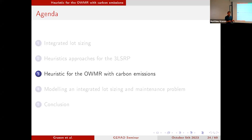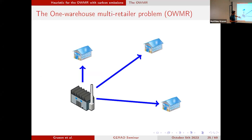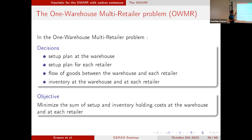The one warehouse multi-retailer problem: you have a warehouse and retailers, and you send goods from the warehouse to the retailers using direct shipments — no routing decisions. The decisions you have to make are the setup decisions at the warehouse level, setup decisions at the retailer level, and the quantities to be ordered by the warehouse and by the different retailers. We also decide on inventory that can be kept from one period to the next, both at the warehouse and retailer level.